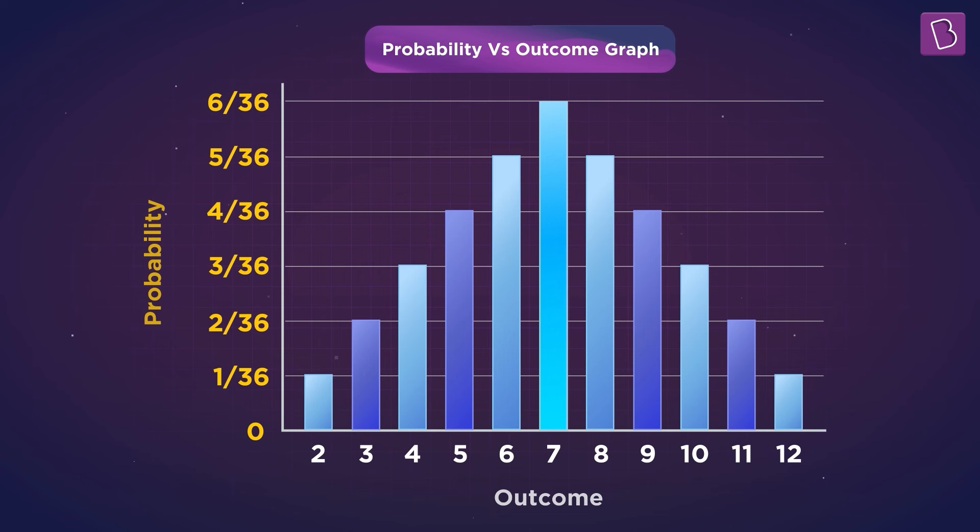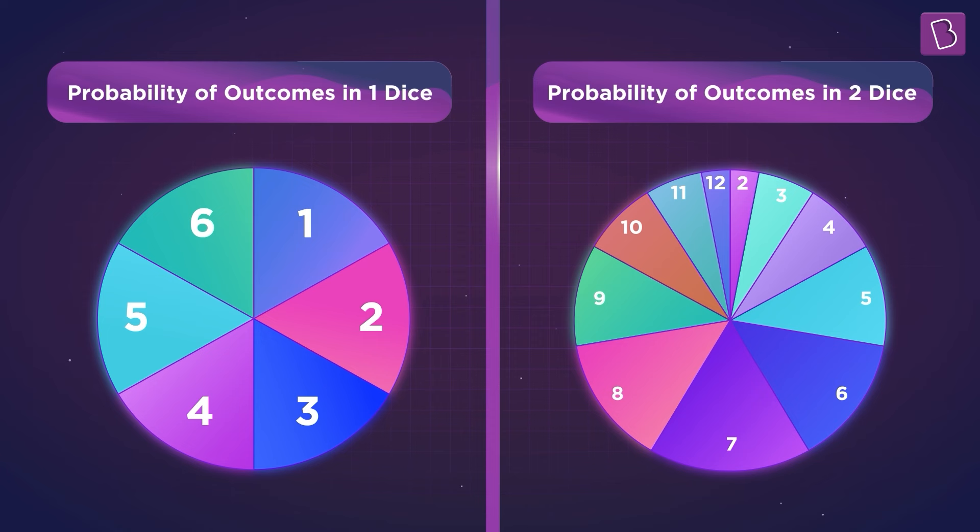By the way, another notable thing here is that seven lies in the middle of our range of outcomes. Coming back to our previous discussion, it is clear that the likelihood of events in the case of two dice is not equal.